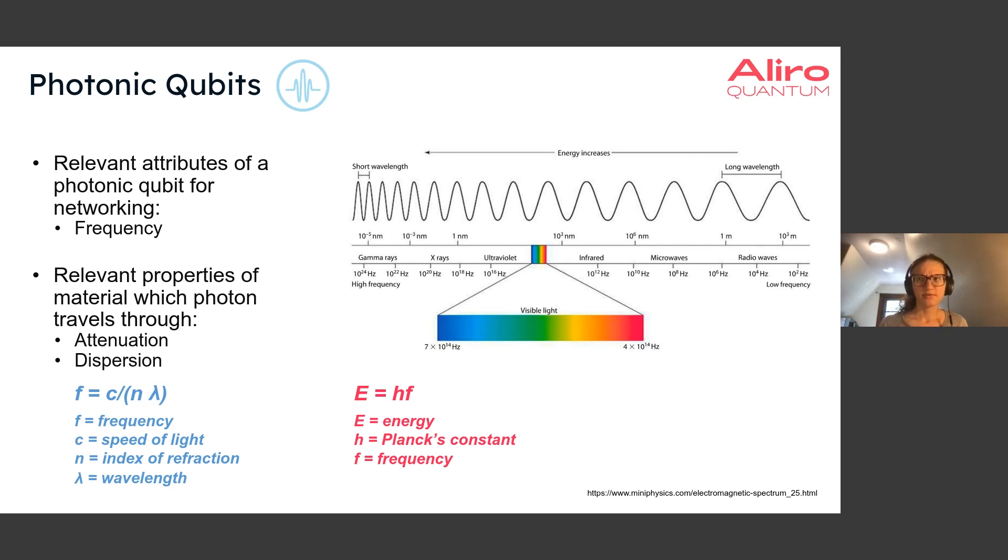On this slide we'll talk a bit about some of the relevant properties of photonic qubits that are important to look at in a quantum networking context. One of the main attributes of photonic qubits that's important for networking is the frequency of the photon. Frequency is related to the photon's energy as well as the photon's wavelength. It's related through the equation E equals HF where H is a constant known as Planck's constant. Most of us have probably seen the electromagnetic spectrum and are familiar with the idea that light is electromagnetic radiation and light can exist at different wavelengths and at different energies. For quantum networking, the energies we'll be working at will be the visible light and also the infrared zone of light.